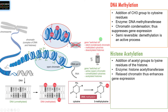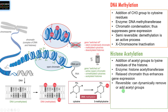DNA methylation is a semi-reversible process — demethylation, to remove the methyl group, is an active process. A classical example is X chromosome inactivation. During embryonic development in females, there are two X chromosomes, and one of them is inactivated primarily by means of DNA methylation. Whereas histone acetylation is a reversible process where acetyl groups are added or removed dynamically.